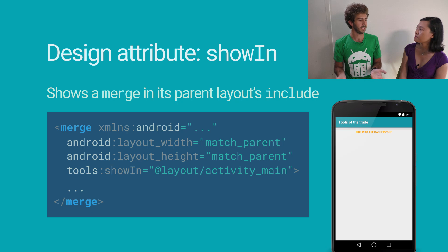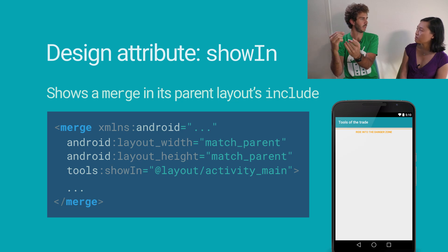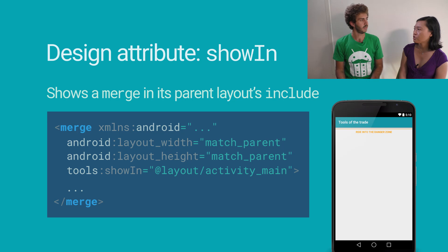By default merge acts like a FrameLayout — it just stacks things on top of each other. You can't change that, but with tools:showIn you can at least have the preview show the merge layout in the context where it's going to be used. There is one caveat: you have to have an include in the target layout you specify that actually uses the same layout file, so it has to be consistent. Android Studio needs to know where the layout goes — it can't figure that out on its own.